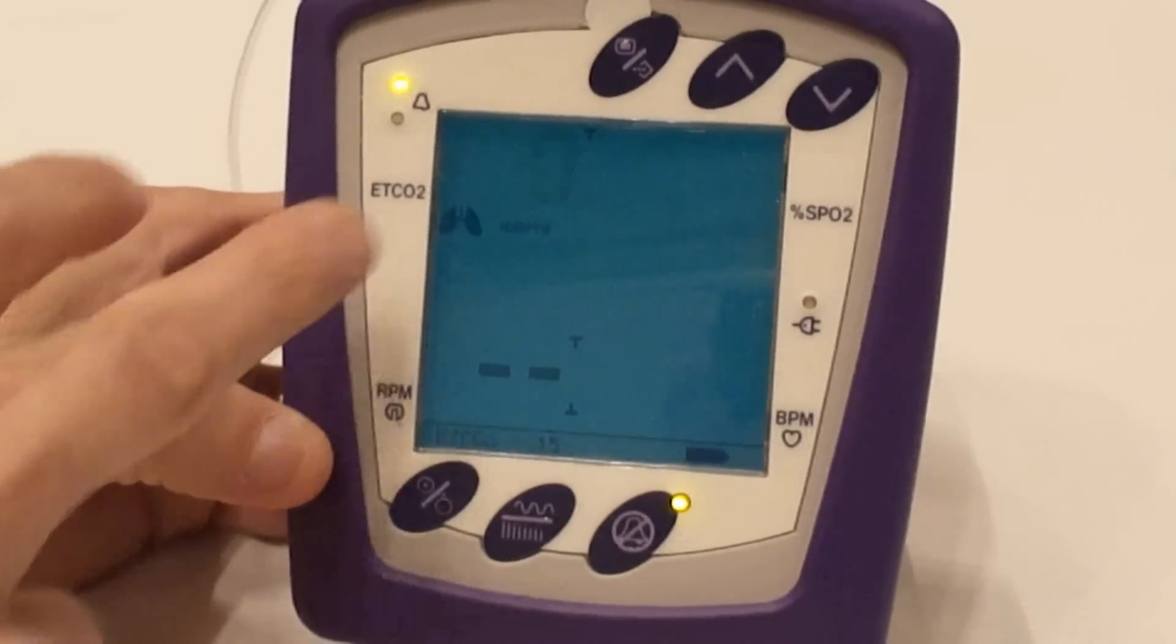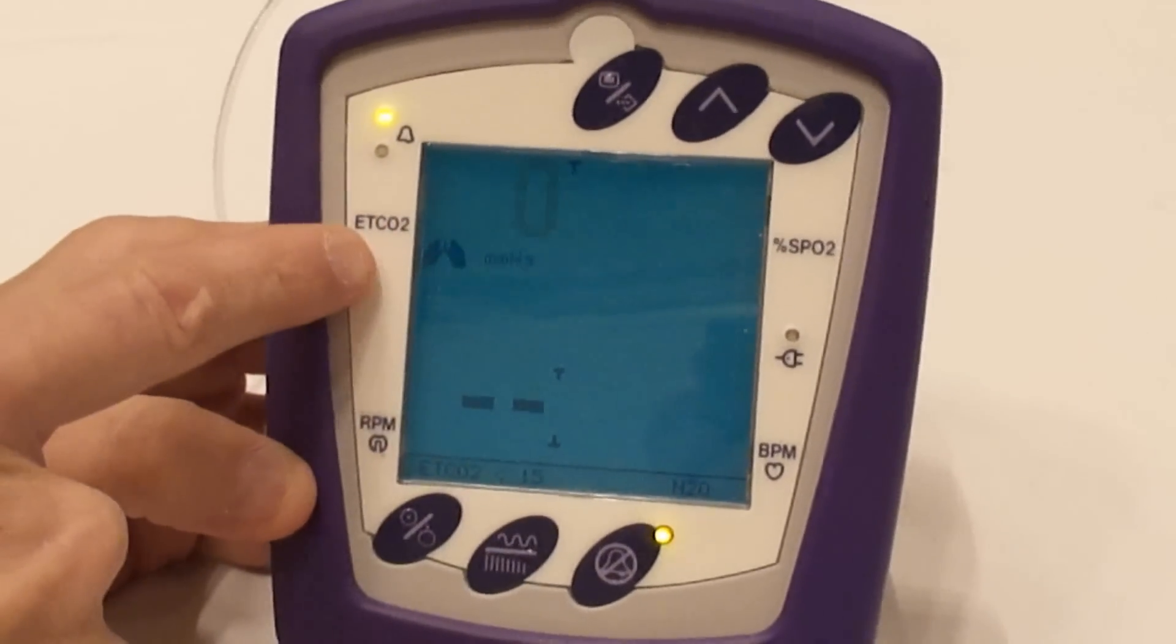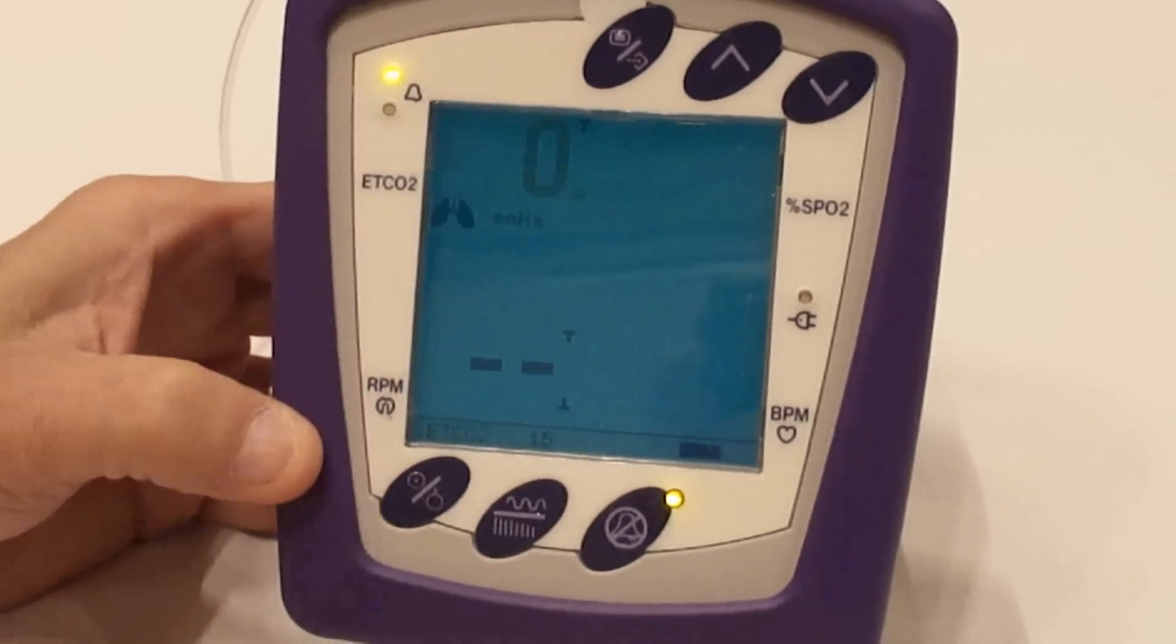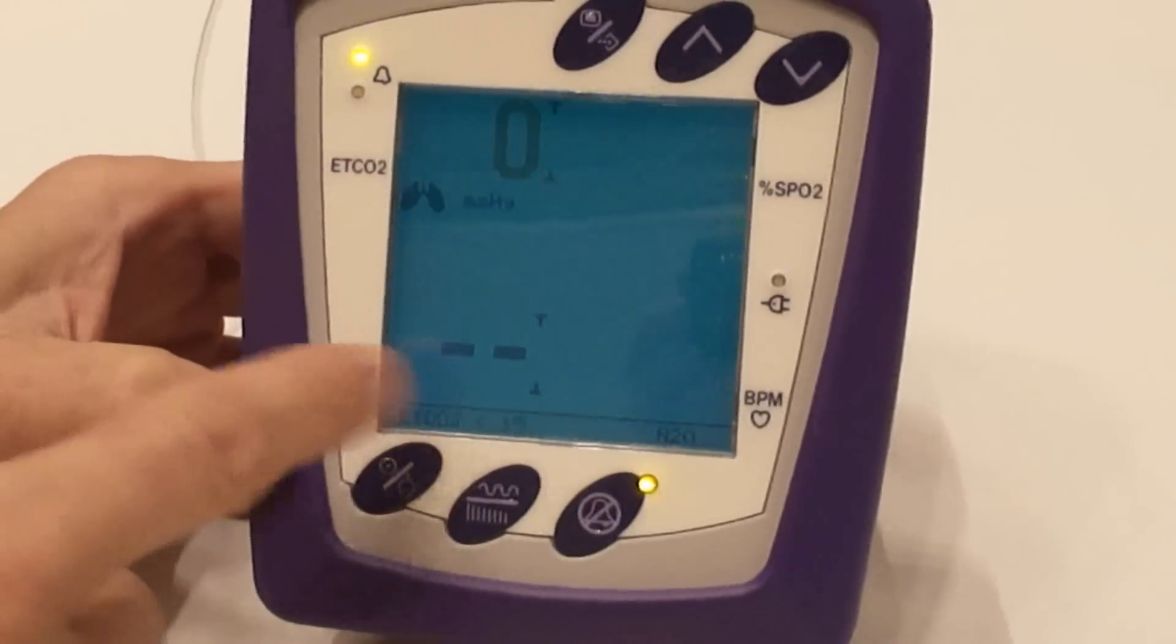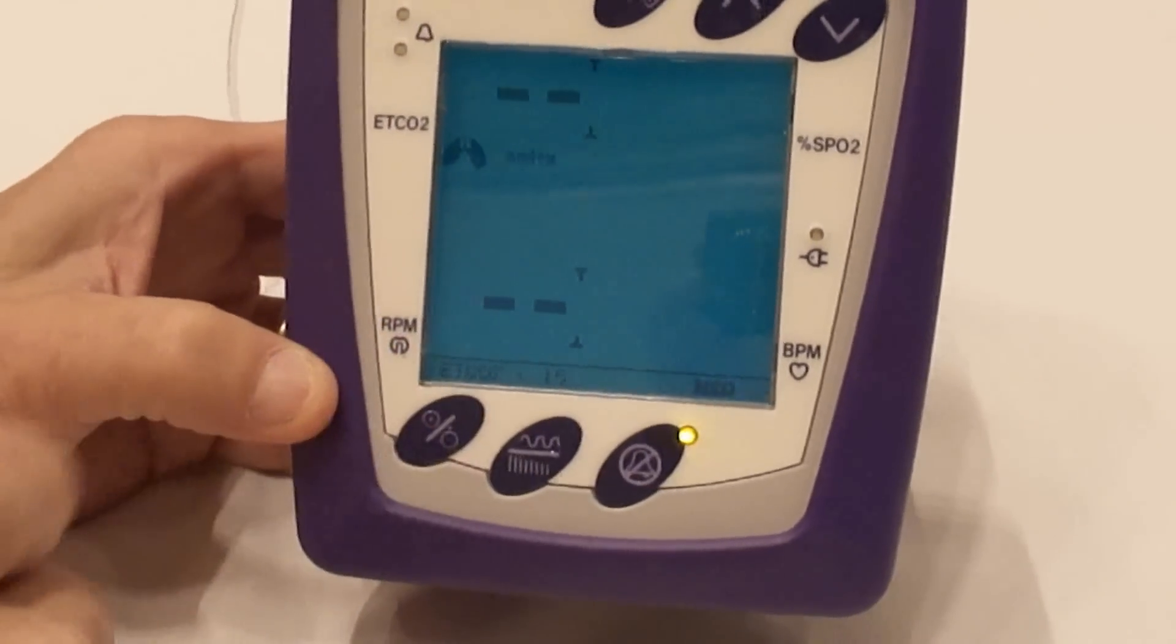As you can see there, up top here, you have where you're going to be monitoring your end-tidal CO2 through the nasal cannula. And then down here will be your respirations per minute.